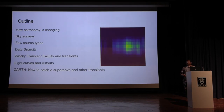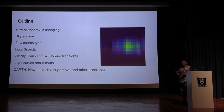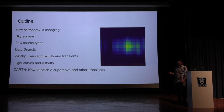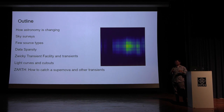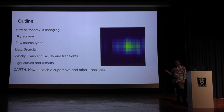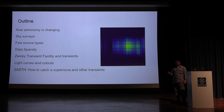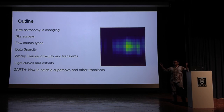Here is the broad outline of the talk. I'm going to cover how astronomy has been changing, what sky surveys are, a few different source types we find in the sky, then data sparsity in astronomy — because given an individual object there's not too much data available — and how we use the minimum amount of data to classify things. Then I'll talk specifically about the Zwicky Transient Facility and introduce transients: objects that change in brightness in a relatively short amount of time.